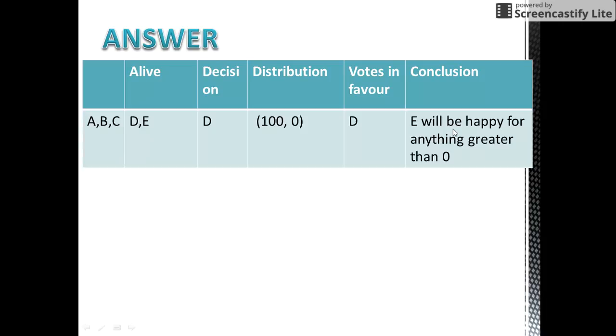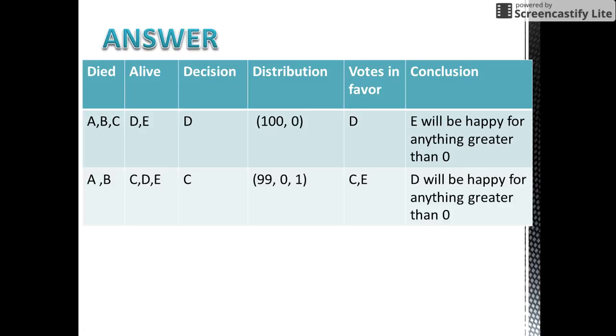Now if suppose C were alive and C would have proposed a plan, then E would happily vote for the plan proposed by C since he would be happy to get anything that is greater than 0. So let us see that condition.